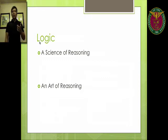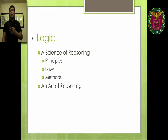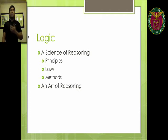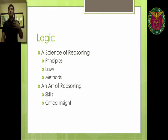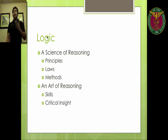Why is it a science of reasoning? First, it has principles and laws which you have to assume to be true. Then you can use those principles and laws to prove a certain theorem or to prove a certain statement, just like how you prove a hypothesis in scientific investigation using the scientific method. It also involves methods in proving that a statement or theorem is true or otherwise. It is also an art of reasoning because it involves skills — creative skills — in terms of how to prove a certain statement to be true or how to disprove a certain statement. And it also involves critical insights. So logic is a science and art of reasoning.